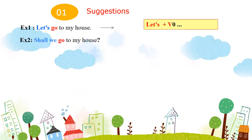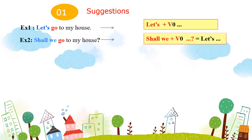Ví dụ thứ 2: "Say we go to my house." – Chúng ta sẽ đến nhà tôi. Dùng cấu trúc câu hỏi với Say we cộng với động từ nguyên mẫu. Đồng nghĩa với Let's.